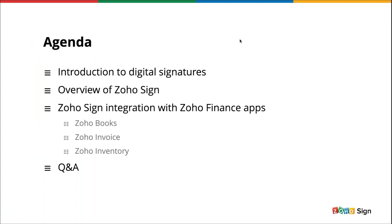Here's a quick look at what we have on the agenda for today's session. First, I will speak briefly about what digital signatures are and why we must use the technology. Then I will offer a quick overview of Zoho Sign as a digital signature application. Following that, I will dive into the main focus of the session, which is a walkthrough of Zoho Sign's integration with Zoho Finance apps — namely Zoho Books, Zoho Invoice, and Zoho Inventory. Towards the end, I will engage the audience in a live Q&A segment.